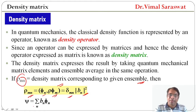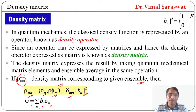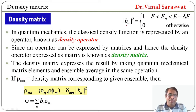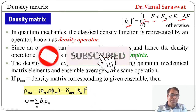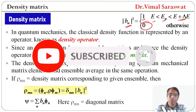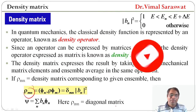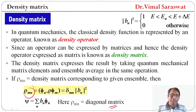Also psi equal to sigma_n b_n phi_n, and here |b_n|^2 equals 1 if E_n lies between E and E plus delta E, and outside it will be 0. So this is the density operator, where rho_mn is actually a diagonal matrix.